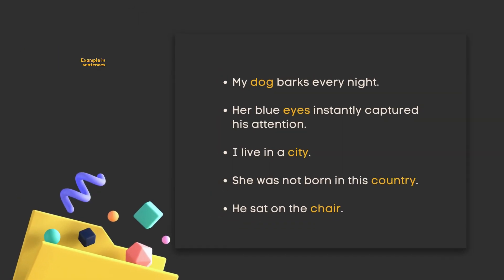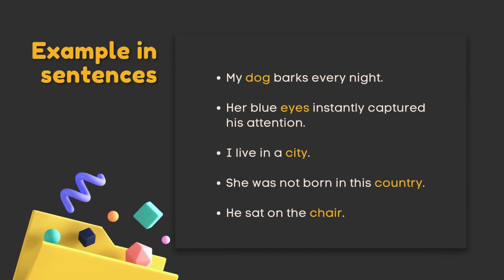Example in sentences: My dog barks every night. Her blue eyes instantly captured his attention. I live in a city. She was not born in this country. He sat on the chair.